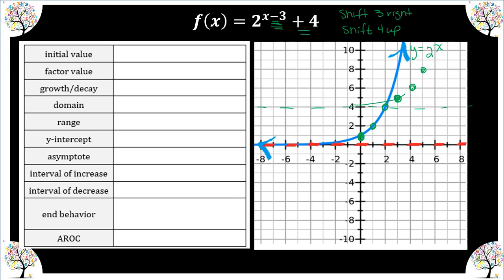Our graph looks like this. Our initial value was 1, my b factor is 2 — this is a growth because my b value is more than 1. My domain is all real numbers. My range: the least my range can be is up to four but not included, and then from four toward positive infinity. The y-intercept is (0, ?) — let's plug in zero.